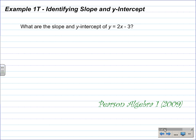Example 1T, identifying slope and y-intercept. This is a very easy example. What are the slope and y-intercept of y equals 2x minus 3? Let's go back to the slope-intercept form, which is y equals mx plus b. On the previous slide, it said m is the slope. We've learned in Lesson 6.1 that m is a variable that represents the slope. So if we compare it to the given equation, the slope, the number in place of the m or the coefficient on the x, is 2.